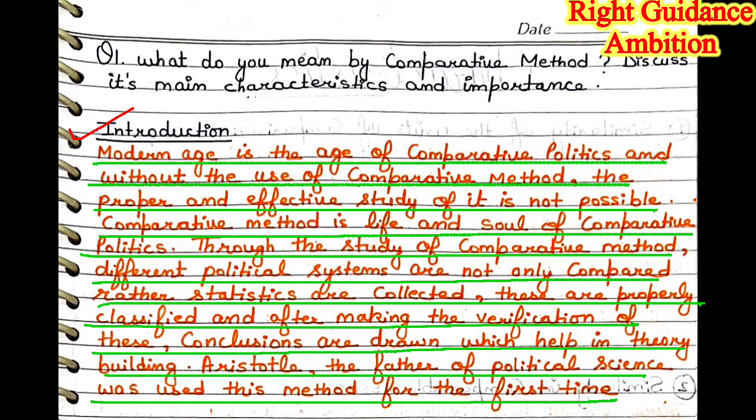Comparative method is the life and soul of comparative politics. Until we compare a political system with another system, we do not know the efficiency of that political system. Through the study of comparative method, different political systems are not only compared but data is collected, properly classified, verified, and conclusions are drawn which help in theory building. Aristotle, the father of political science, was the first to use this method.